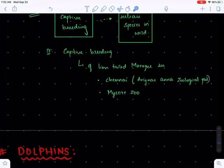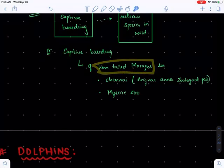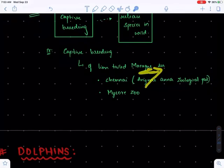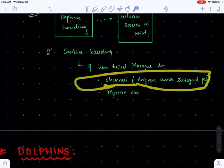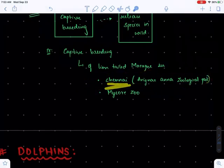Some examples of captive breeding include the lion-tailed macaque. These animals are present in Chennai's Arignar Anna Zoological Park and also in Mysore Zoo.